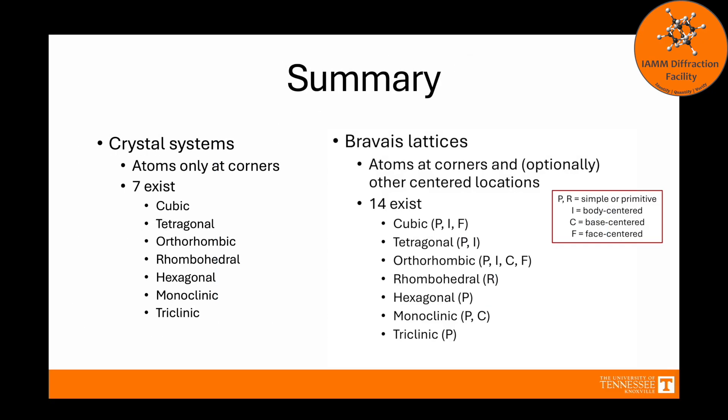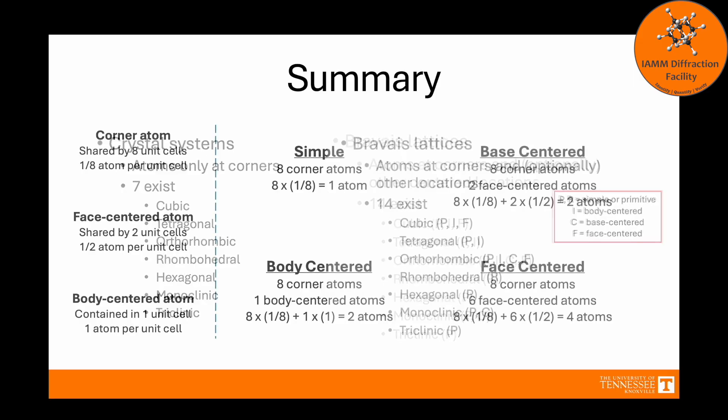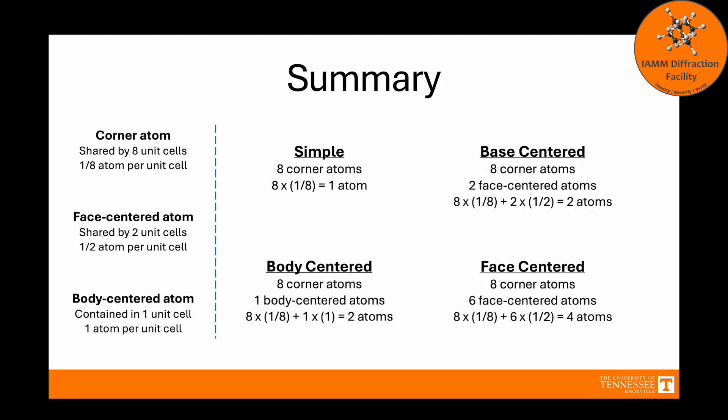In summary, crystal systems have atoms only at corners. Seven of them exist. Bravais lattices have atoms at corners and optionally other centered locations, and 14 of them exist. They are divvied up among the different crystal systems as shown. And this summarizes what we just went through with calculating the number of atoms per unit cell.